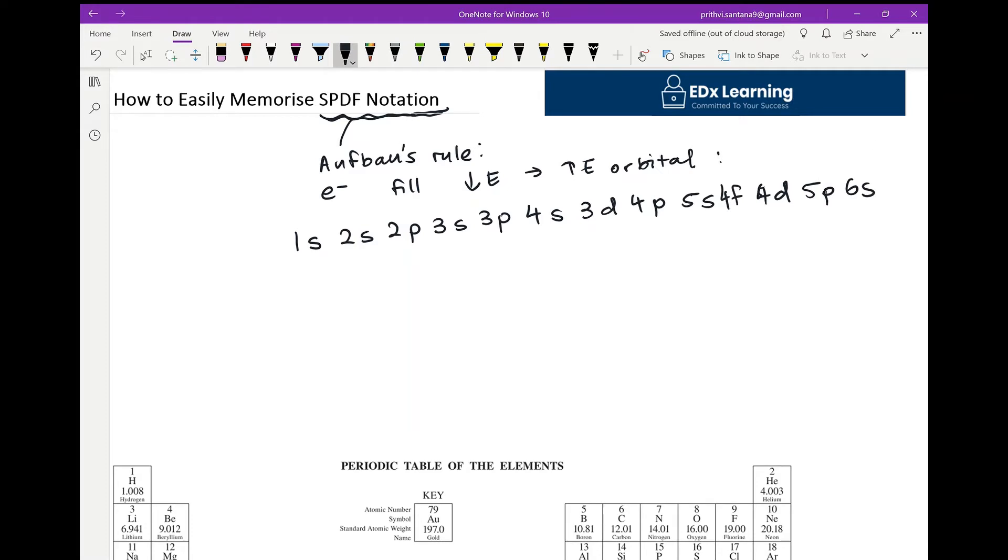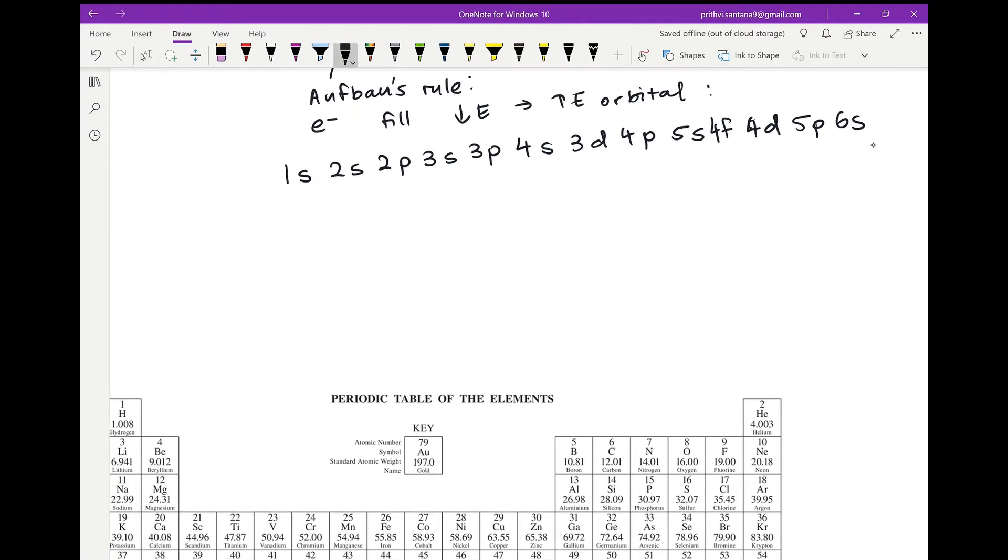So you might ask, how did I memorize all of this? Now it's quite simple. I simply remember that the different subshells are S, P, D, and F. And so what I do is I start by writing the first letter, and the first letter in SPDF notation is S.